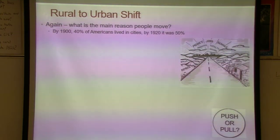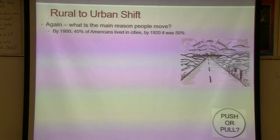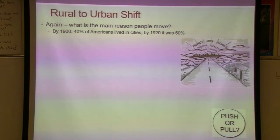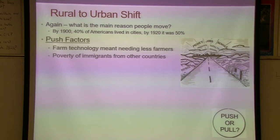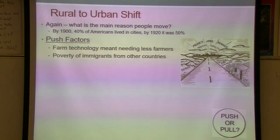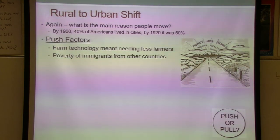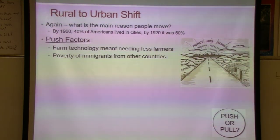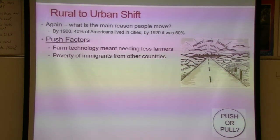The shift we would have — going back to immigration — the number one reason people move is economics. We're going to have push-pull factors here. By 1900, 40% of Americans were living in cities, and by the 1920 census it was the first time over half the people lived in urban areas. Farm technology made it where we needed fewer farmers. For example, a farmer in Nebraska with six children: one son may farm, but the others would move to the city.